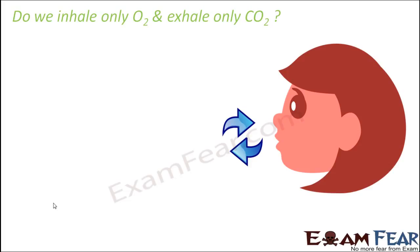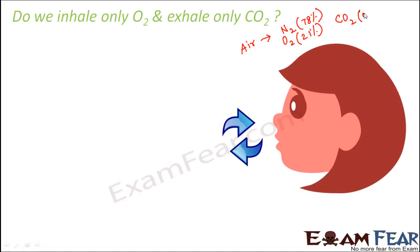Why is it like that? Because our body does not have a selective mechanism to inhale only oxygen. When you look at your surroundings, they contain air, and air is a mixture of various gases. Air contains maximum nitrogen, which is almost 78%, oxygen which is almost 21%, carbon dioxide which is very less — as low as 0.03% — and some other gases are also present. So this is the composition of air.